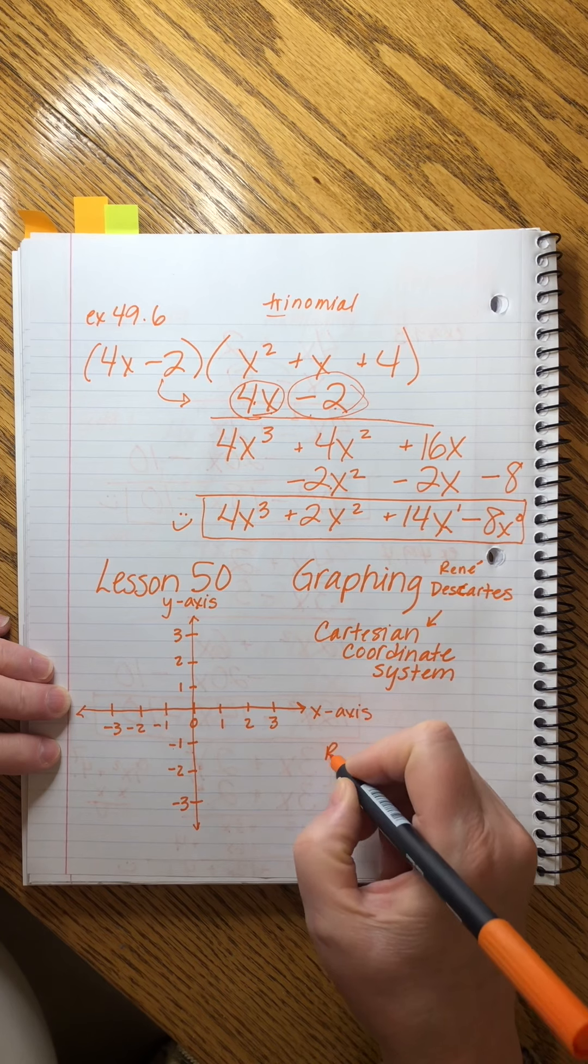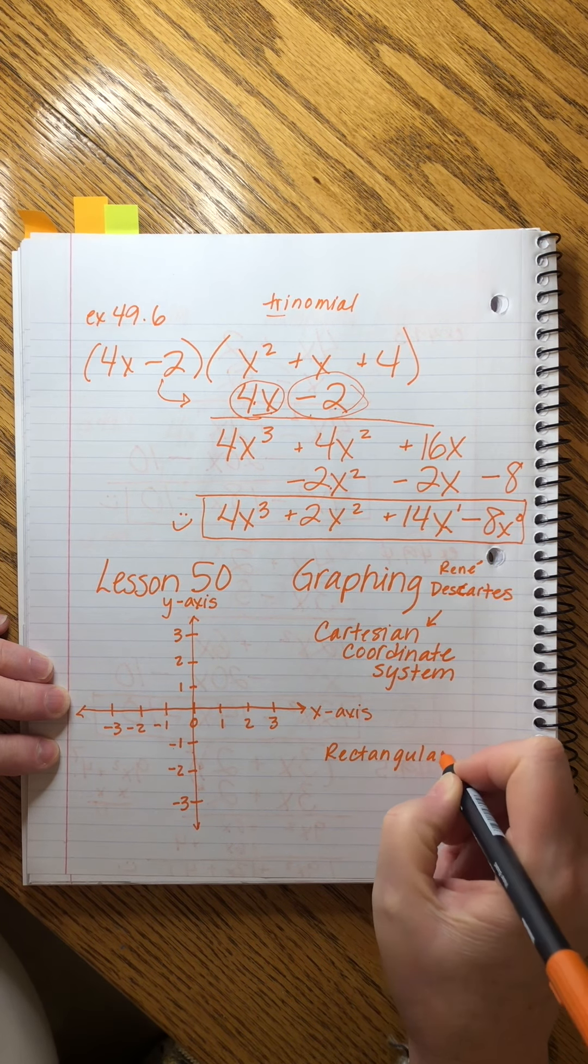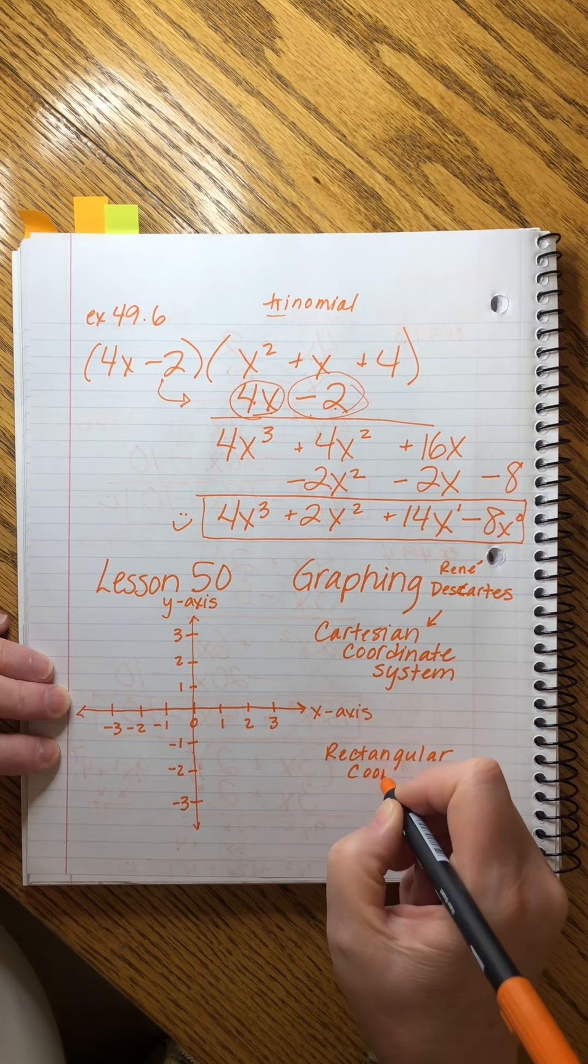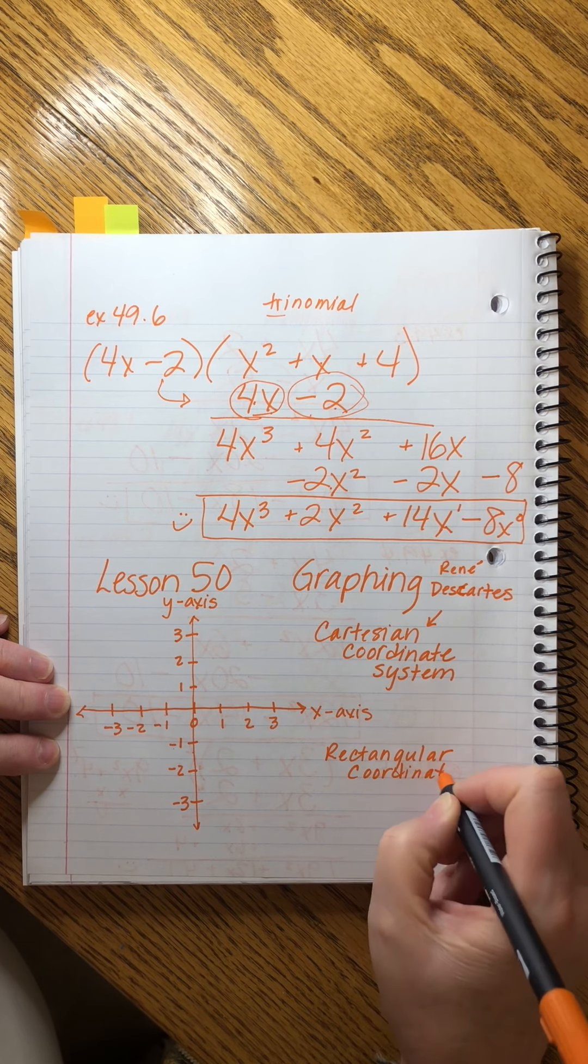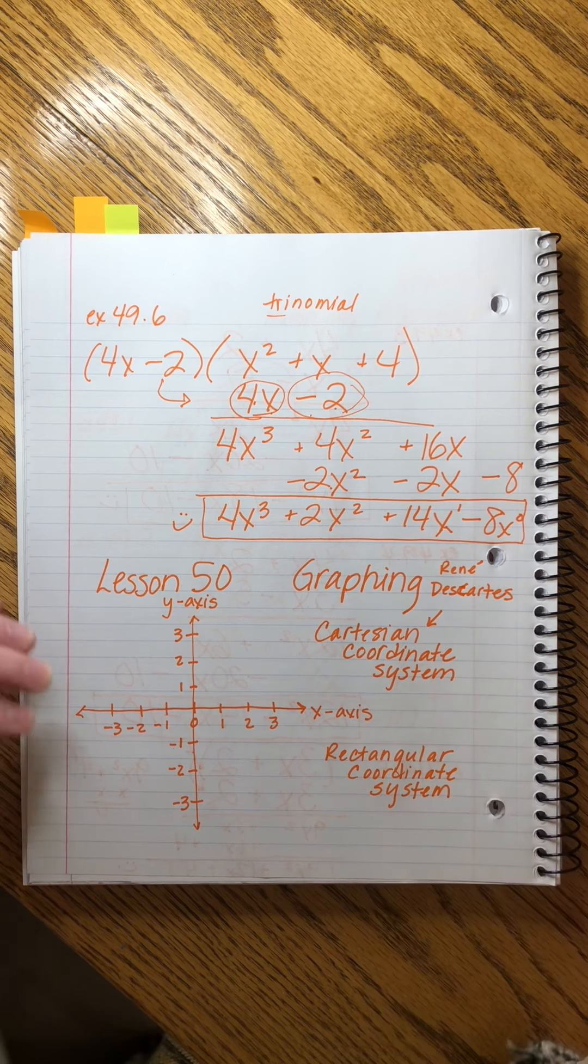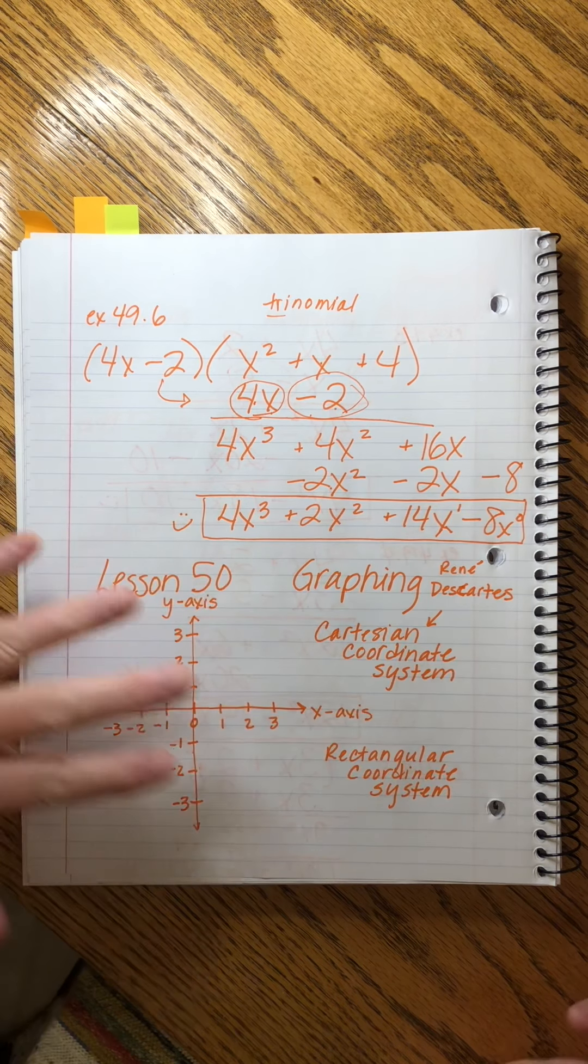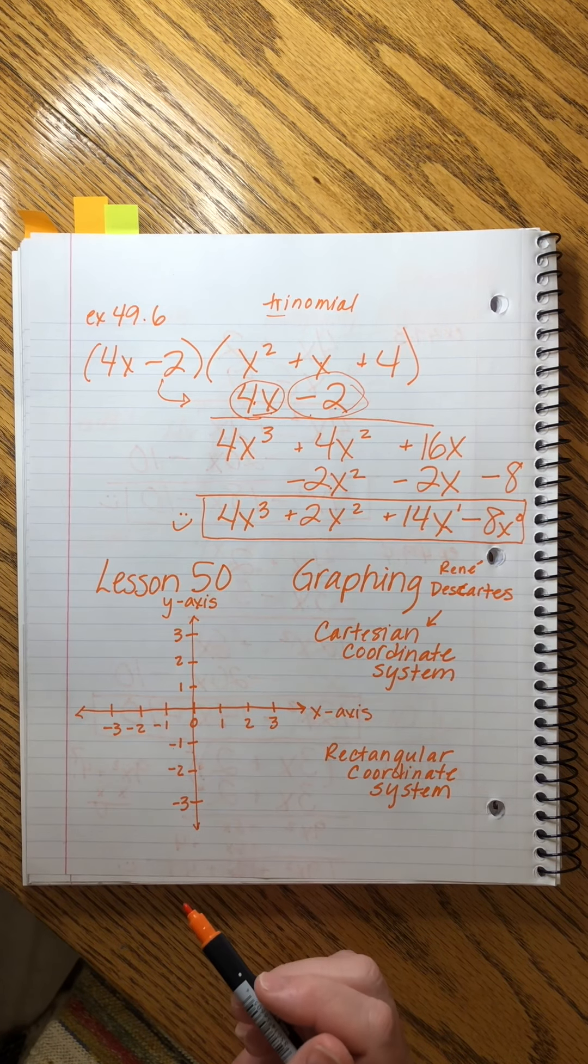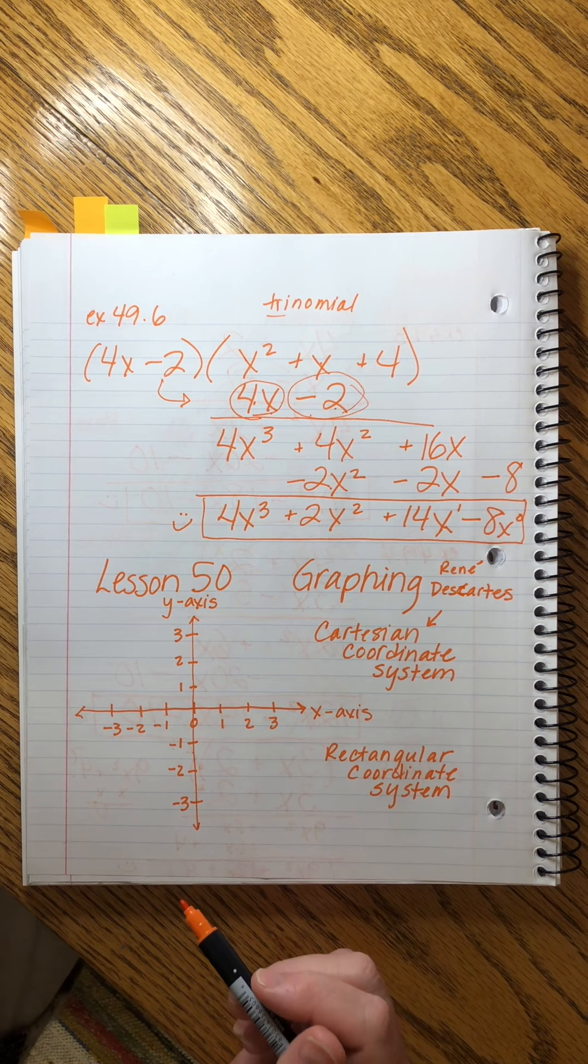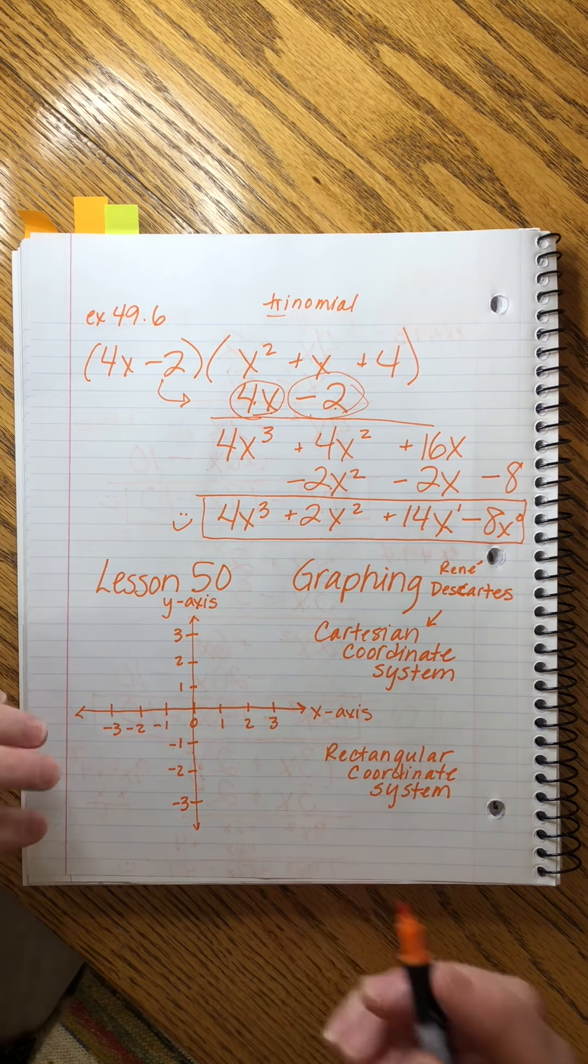But we also sometimes call it a rectangular coordinate system, and I'll show you why that name makes sense in just a second. Now, whenever we want to locate a point on this system, we can use what's essentially an address to locate it.